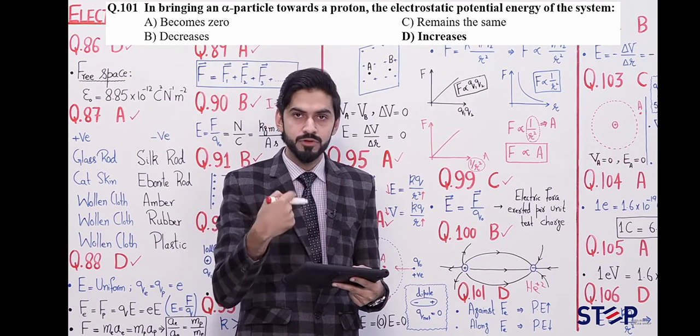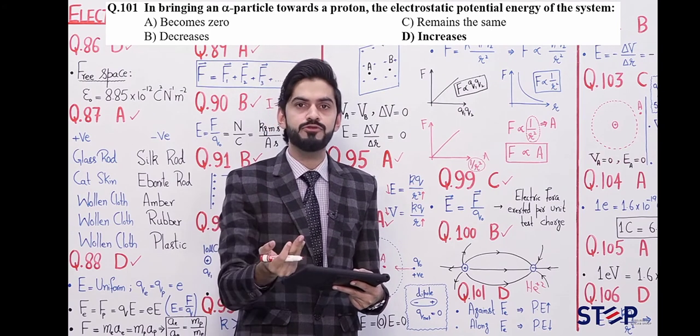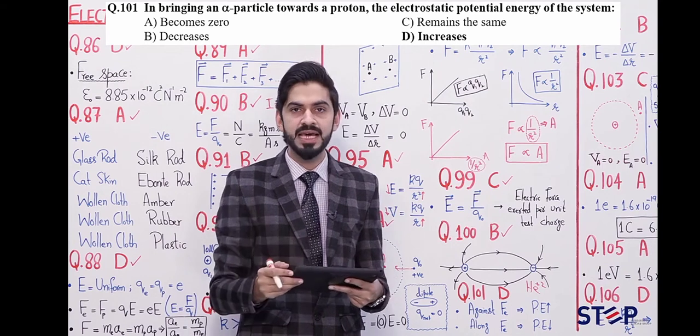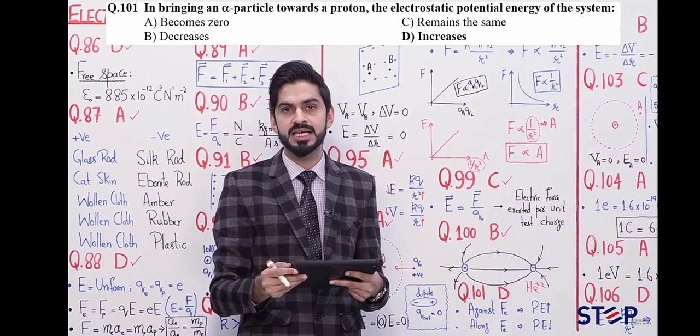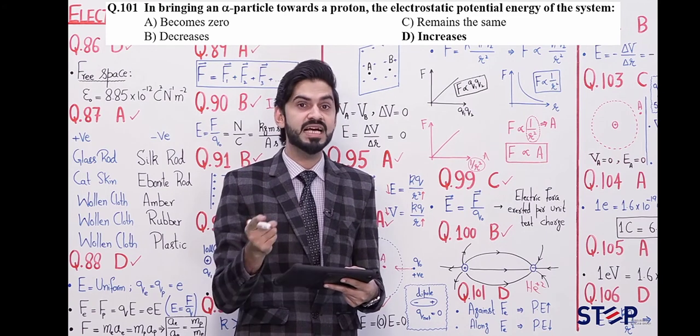If we are bringing the alpha particle towards the proton, we have to apply force against the repulsive electric force that naturally exists between them. We move against this force. This is the question that we discussed in the last test.